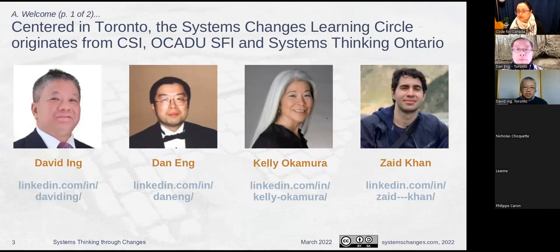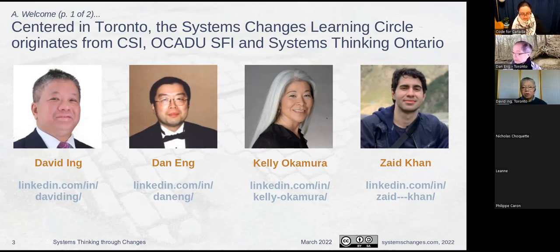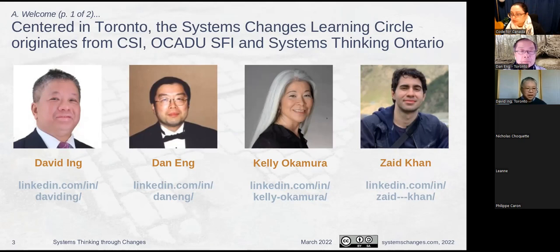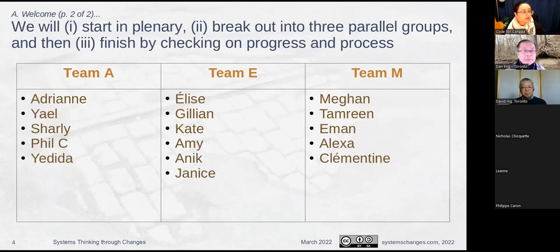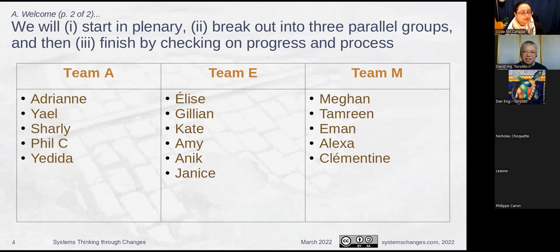We are the core of the System Changes Learning Circle. We started as a combination of overlapping people from the Center for Social Innovation in Toronto. At OCADU there's a Strategic Foresight Innovation Program. And System Thinking Ontario is a monthly meeting we've been running for 10 years. I'm David Ng. I was president of the International Society for the System Sciences. Toronto is a Systems Thinking hub of the world. We have Dan Ng and Kelly Okamura, who will be guiding two of the breakout sessions, and Zad Khan, who is not here today but is a member of our team. These are the teams that are going to break out: Team A for Adrian, Team E for Elise, and Team M for Megan.